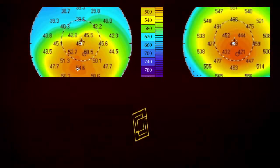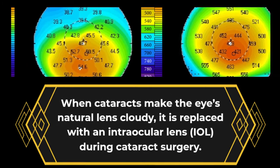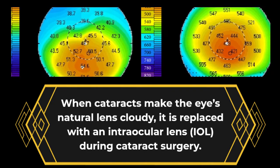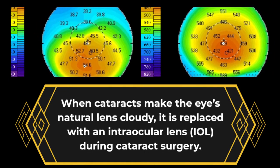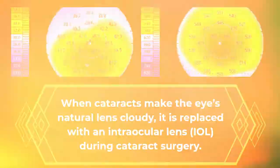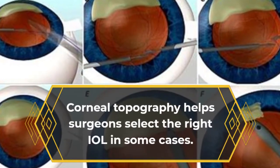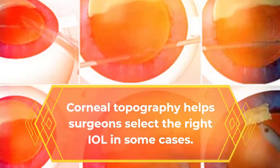When cataracts make the eye's natural lens cloudy, it is replaced with an intraocular lens during cataract surgery. Corneal topography helps the surgeon select the right IOL in some cases.